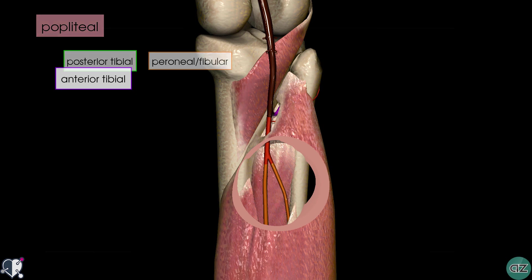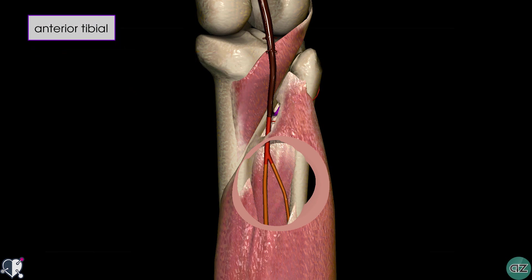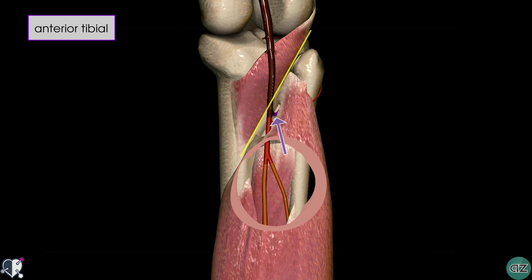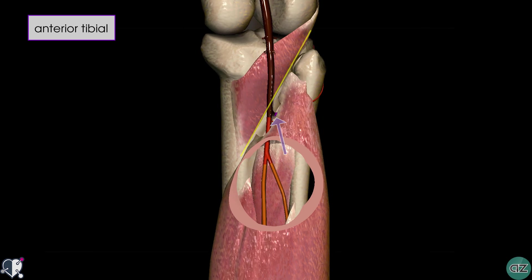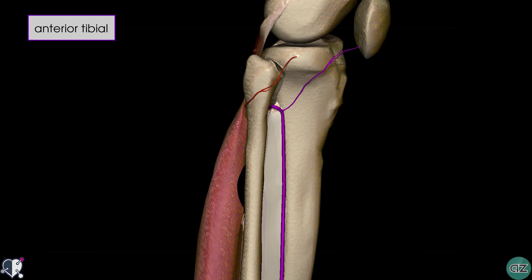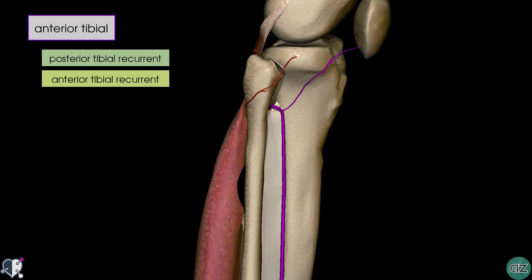Now let's take a look at the branches of the anterior tibial artery. You can see it here in purple and it arises just below the inferior border of the popliteus muscle. Rotating the model around, you can see how it enters into the anterior or extensor compartment of the leg just above the interosseous membrane. The branches include the posterior tibial recurrent and the anterior tibial recurrent arteries proximally. The posterior tibial recurrent artery is not always present and is not shown on this model, but the anterior tibial recurrent artery is shown here.